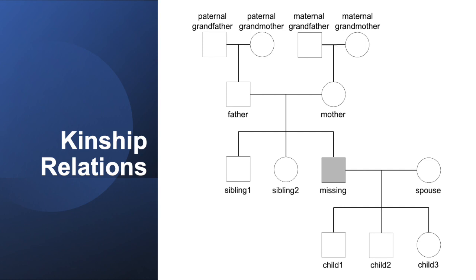Here we're trying to construct that missing person's genotype from family information. We can have parents, we can have children, we can use a spouse to subtract out the children's DNA, and we can use siblings. The more information we have, the less uncertainty we have in that missing person's genotype. In the World Trade Center there were many more family members, but here with this bus crash we only have one family member.